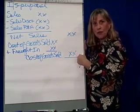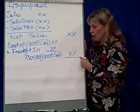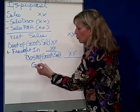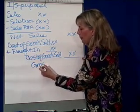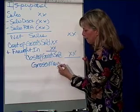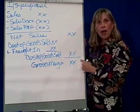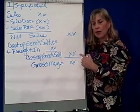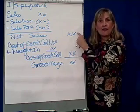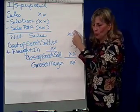Net sales minus cost of goods sold — which includes the freight cost — gives me a subtotal known as the gross margin or gross profit. That gross margin or gross profit is what you clear after you've paid for the goods that you sold.